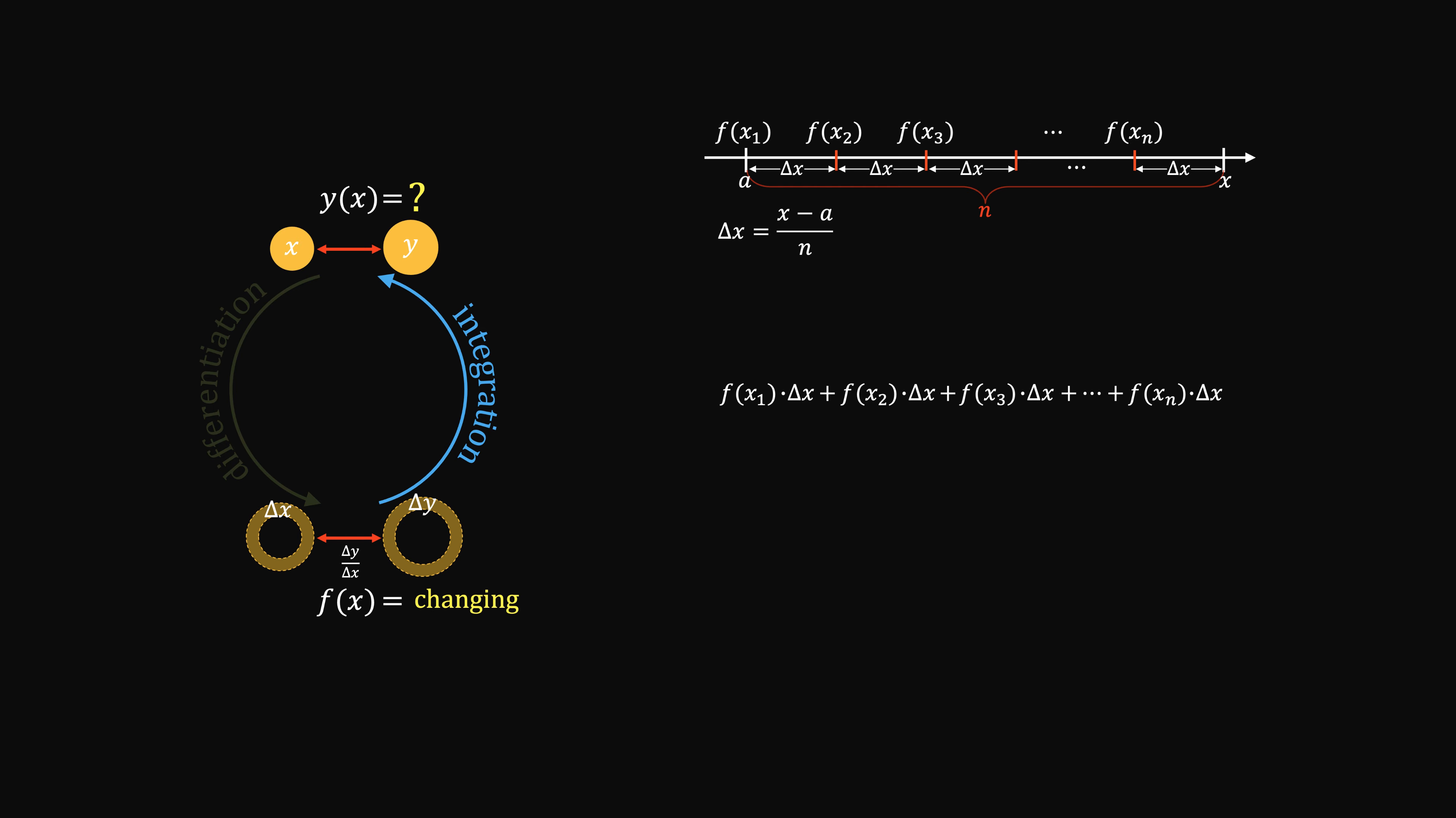Add them up. This is how much y changes. Add it to the starting y. You can get what final y is. This aggregation approach is pretty straightforward. Nothing unusual. Plug in a specific number, you will get the answer.